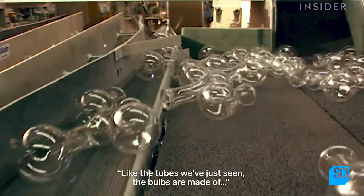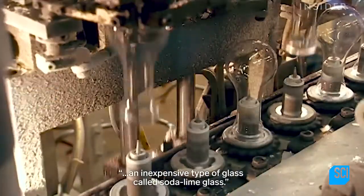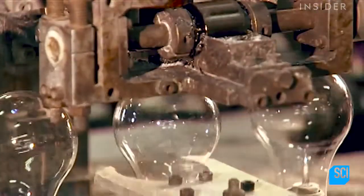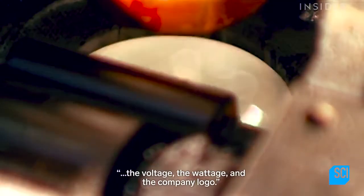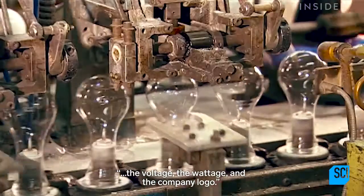Like the tubes we've just seen, the bulbs are made of an inexpensive type of glass called soda lime glass. A machine stamps the top of each bulb with the voltage, the wattage, and the company logo.